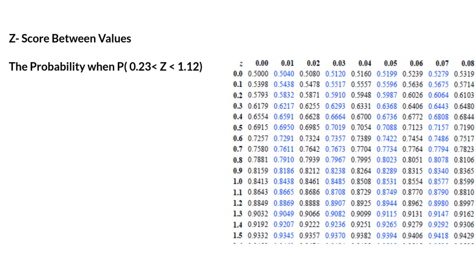So now we're going to talk about how we calculate the Z-score between two different values. What I want you to understand is that when you're using the Z-score table for this probability where we have Z being between values, the greatest value being 1.12 and its lowest value being a boundary of 0.23, we have to identify those on our table.